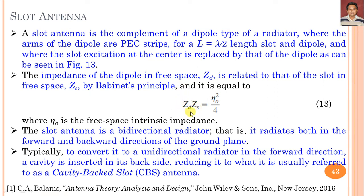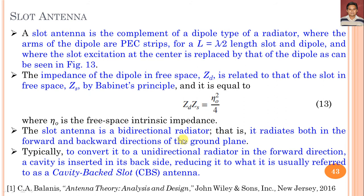For this complementary structure, the impedance of the dipole ZD in free space is related to the slot in free space ZS by the Babinet principle — which we have discussed in a separate lecture — and it is equal to ZD times ZS equals eta-0 squared by 4, where eta-0 is the free-space intrinsic impedance.